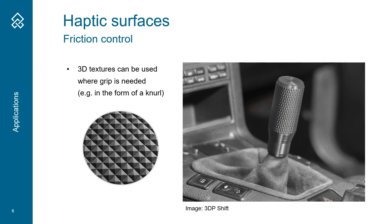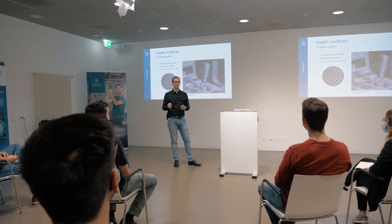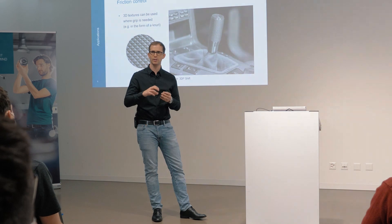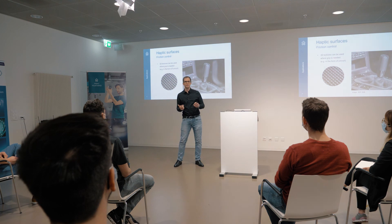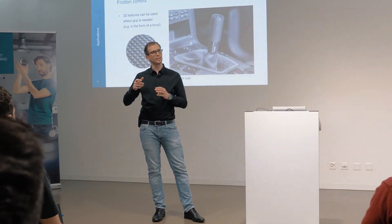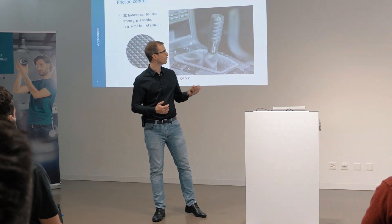Another application of 3D printed textures can be haptic surfaces where friction is needed. Think about a shift knob in a car, as shown here in the picture, or a knurling screw to tighten something. Another interesting example is the knurled lid on a pet bottle — that makes it easier to open and close your favourite beverage. That's a good example for haptic surfaces.